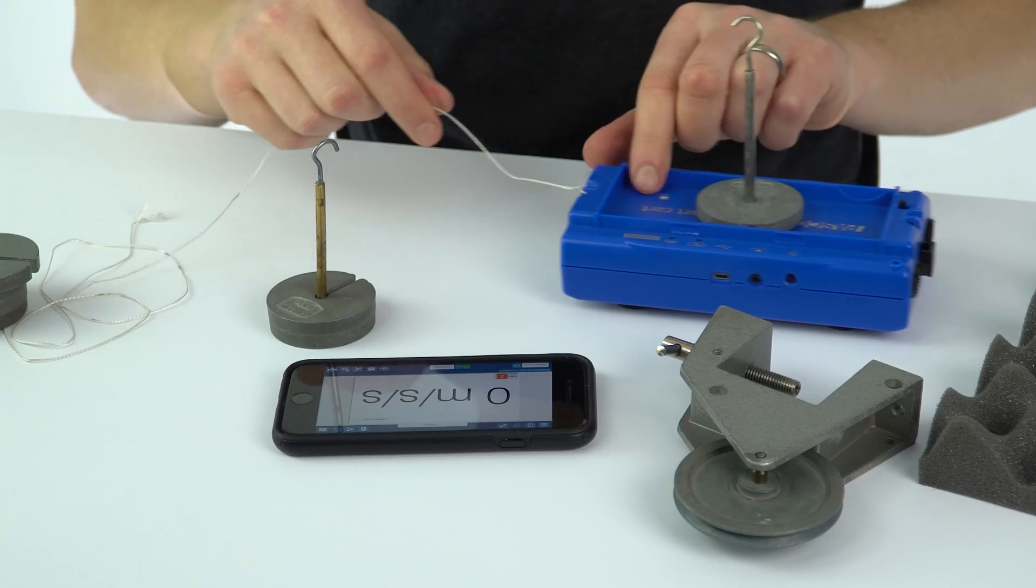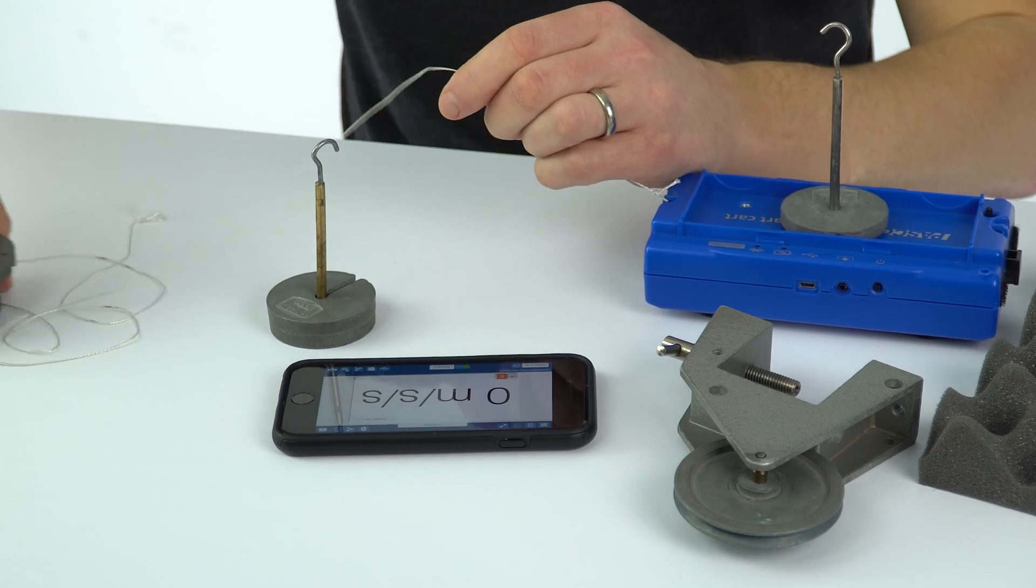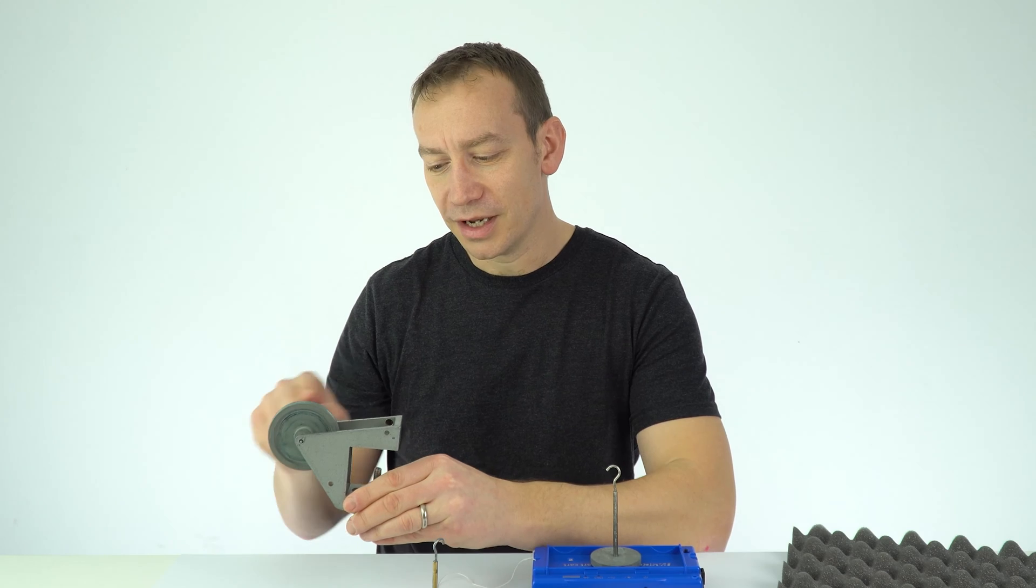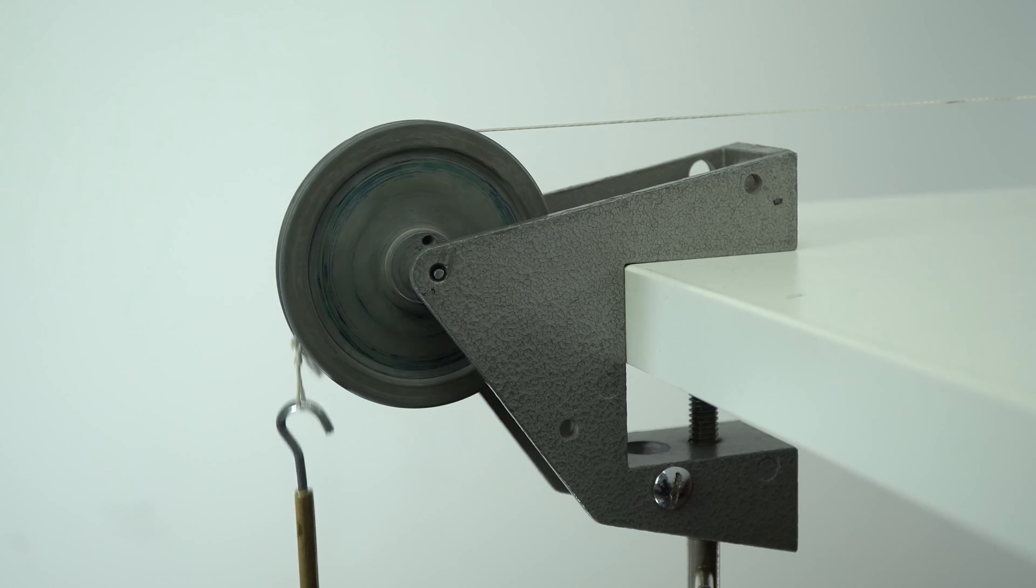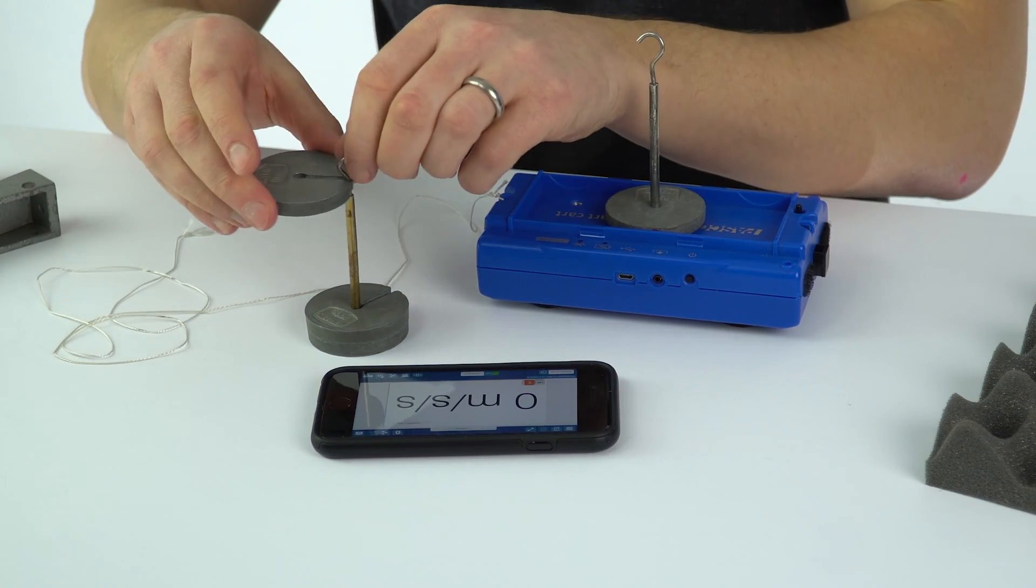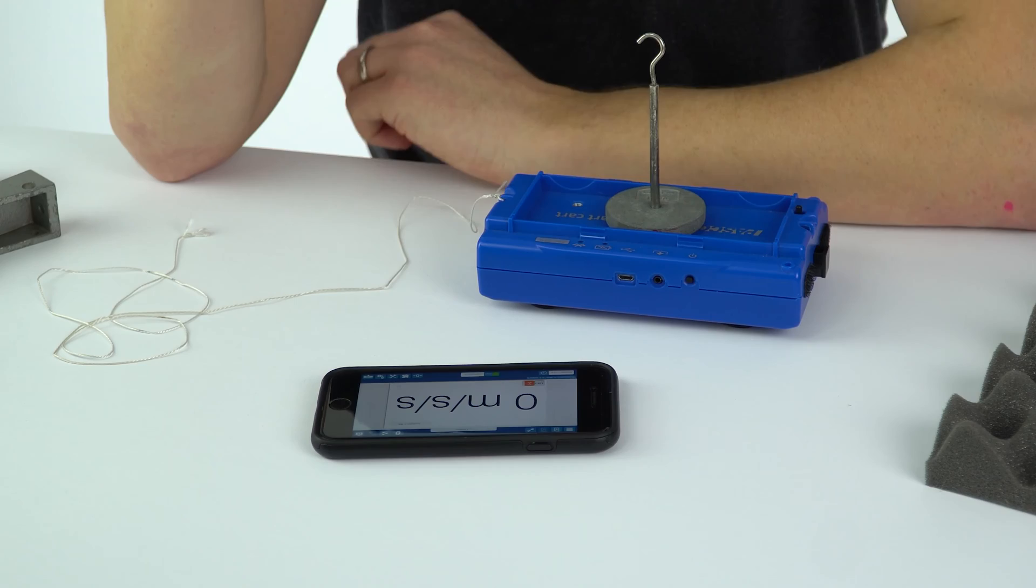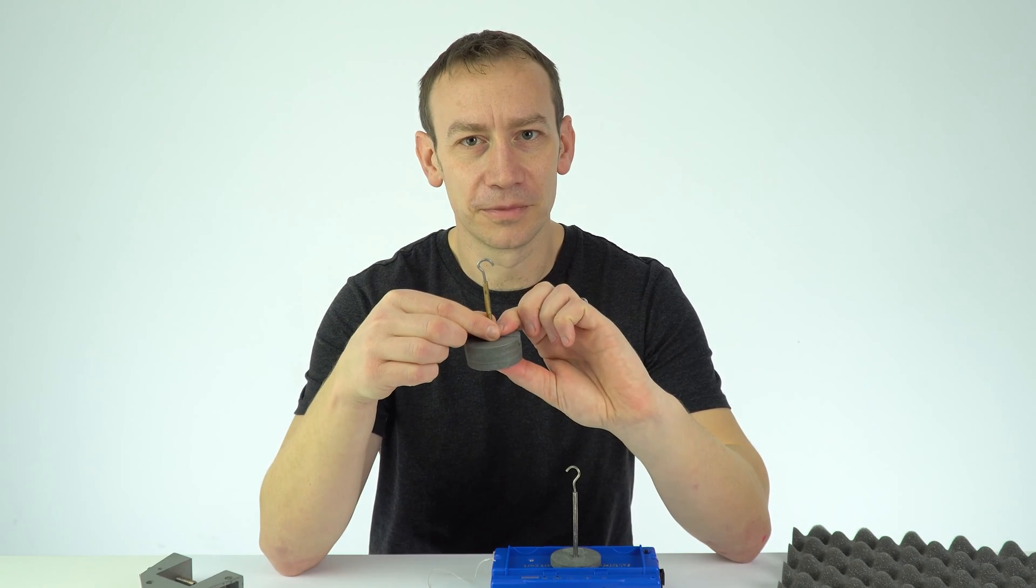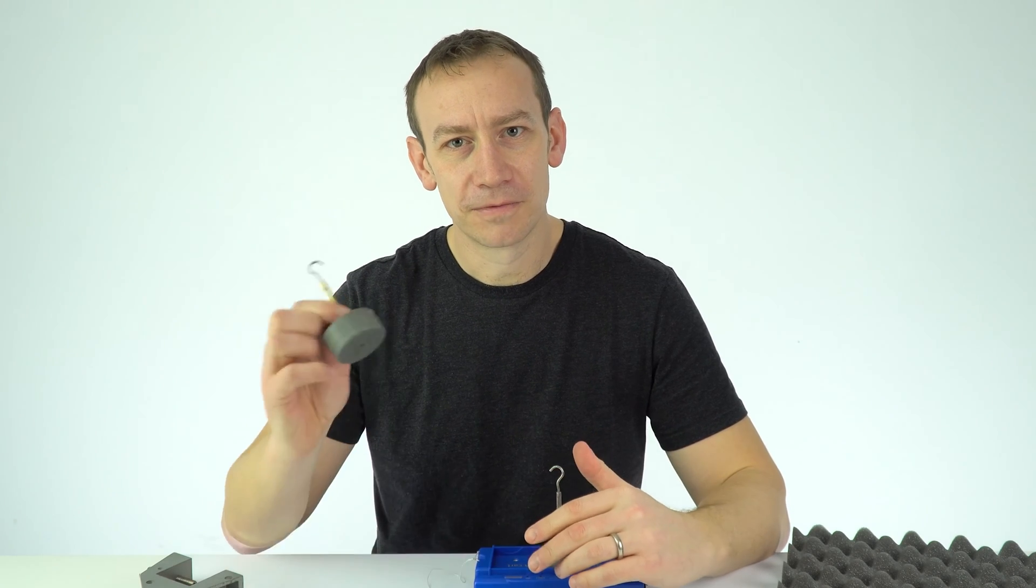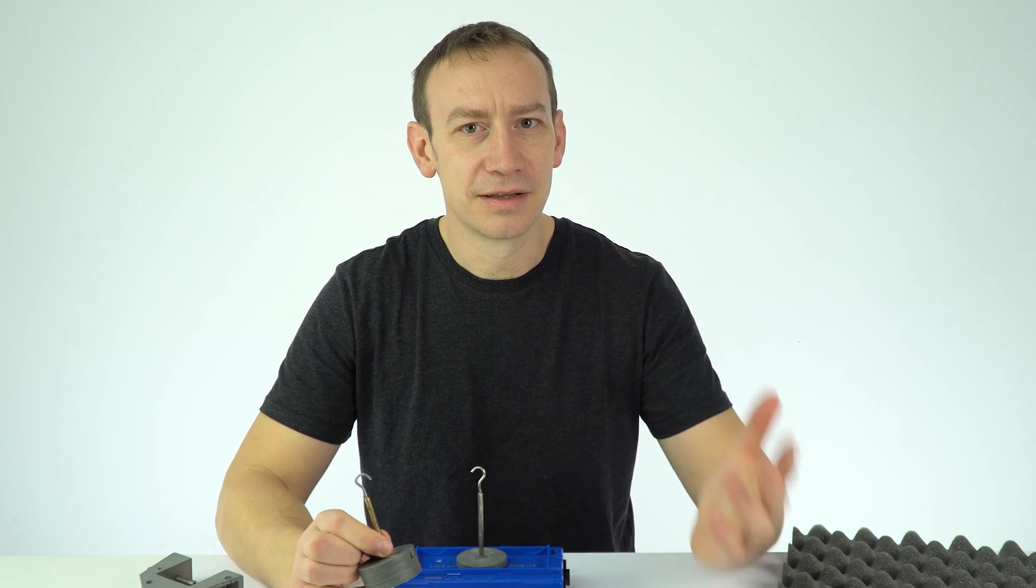So I have a piece of string that's connected from the trolley, it can go over a pulley over the edge of the bench and this just reduces the friction as that string is overhanging the end. Then we can use different masses attached to the mass hanger to affect the size of the force. What we're going to be doing in this first experiment is looking at the relationship between the force applied and the acceleration, and we're going to be doing that by keeping the mass the same.